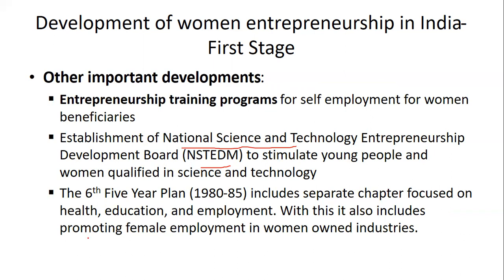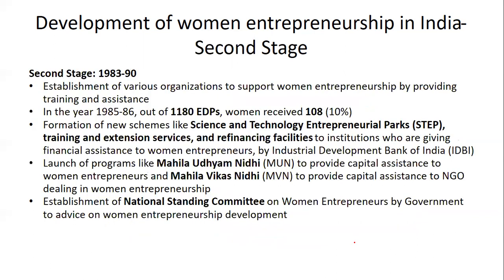The Sixth Five-Year Plan (1980 to 1985) included a separate chapter focused on health, education, and employment with respect to women entrepreneurship, and also promoted female employment in women-owned industries.